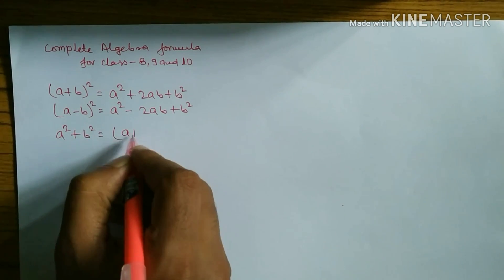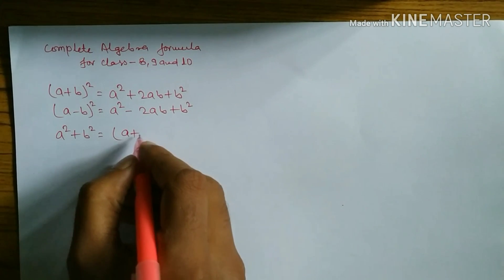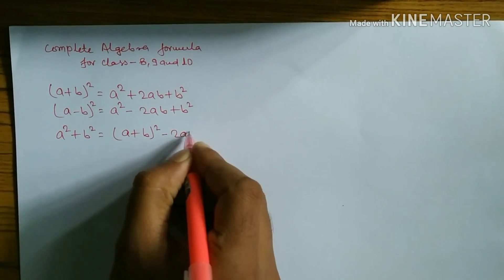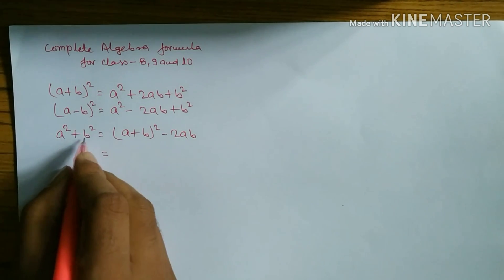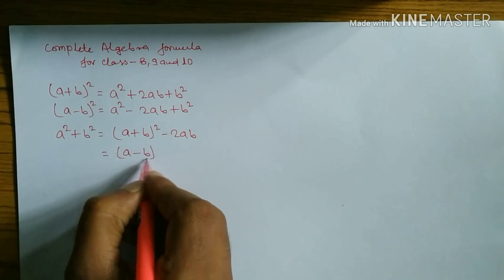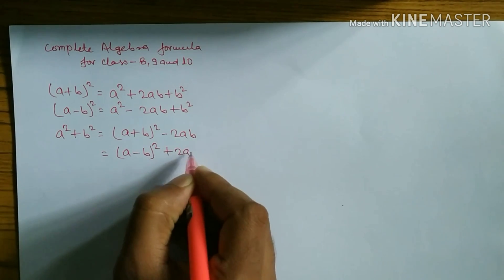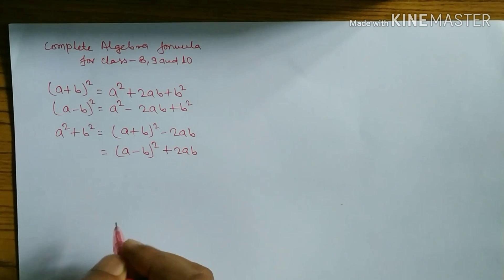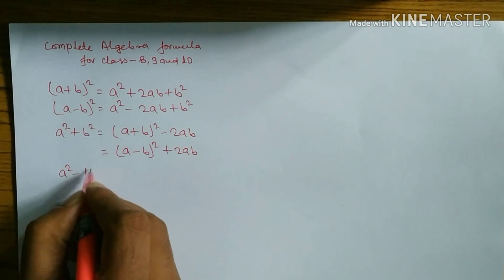The formula for a² + b² is (a + b)² - 2ab. Similarly, a² + b² can also be written as (a - b)² + 2ab.